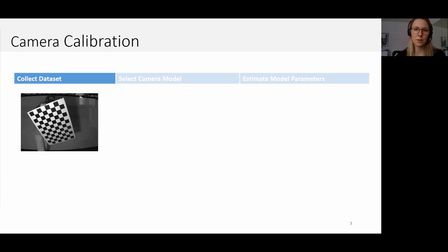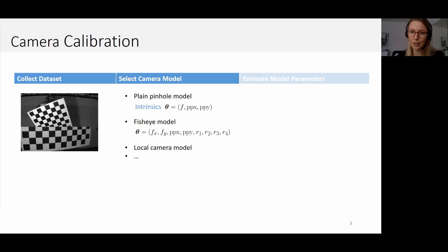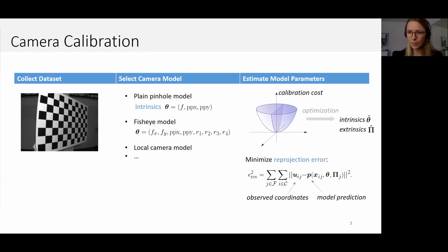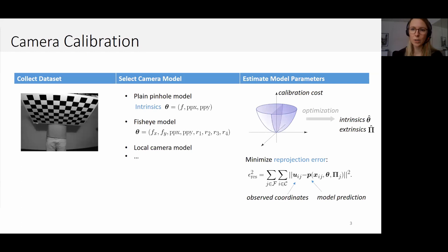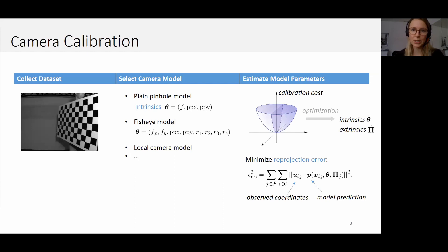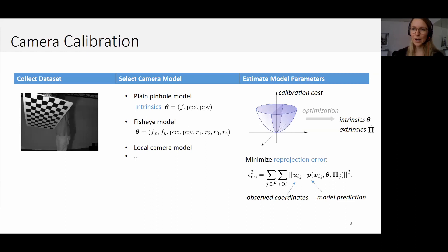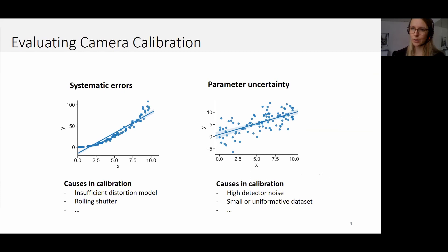A camera distortion model must be chosen. Unfortunately, we cannot model every camera using a simple pinhole model — depending on the lens distortion, more complex models are needed. Once we've decided on a model, we can estimate the model parameters, which is essentially a model fit. We try to minimize the difference between our model's prediction and the actual observation — minimizing the distance between the predicted image coordinates of chessboard corners and the observed coordinates. The question I want to address is: how well does this calibration result model my real camera, and which errors and uncertainties remain?